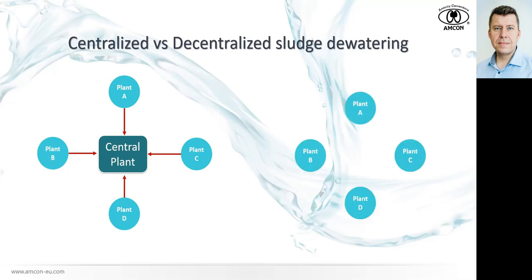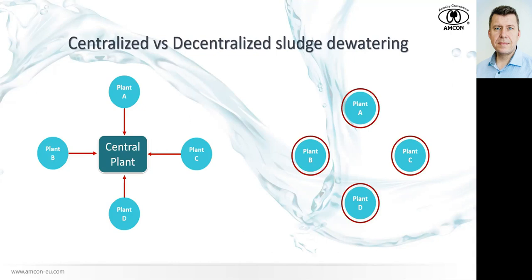In the decentralized approach, independent wastewater treatment plants keep everything in one loop. They are equipped with technologies scaled according to their size, and they dewater the sludge themselves directly at their plant. This is what we're after — there are plenty of arguments why it's clever to do that, which we'll touch on later.